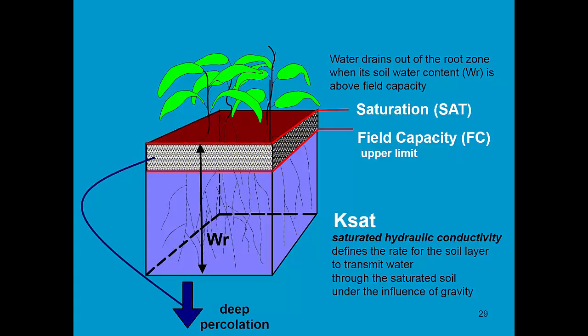To describe soil water movement, we have to consider the hydraulic conductivity of the soil. In AquaCrop, we use the saturated hydraulic conductivity, which is the rate for the soil layer to transmit water through the saturated soil under the influence of gravity.